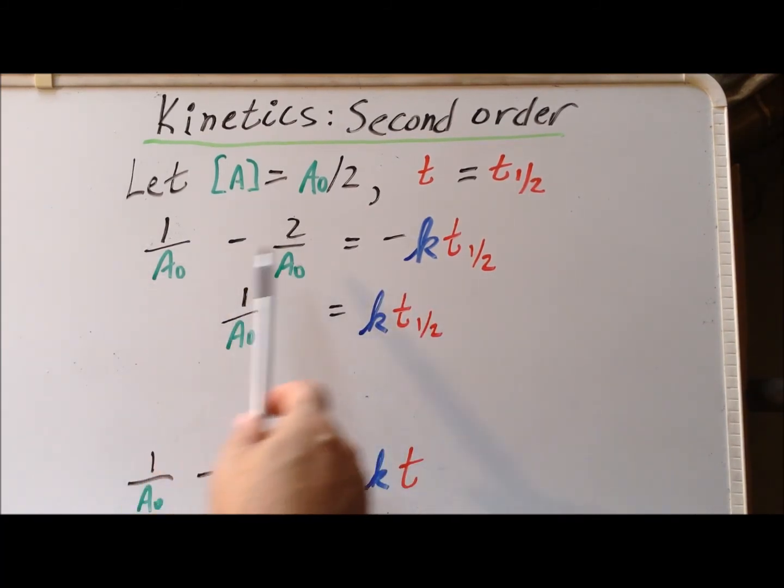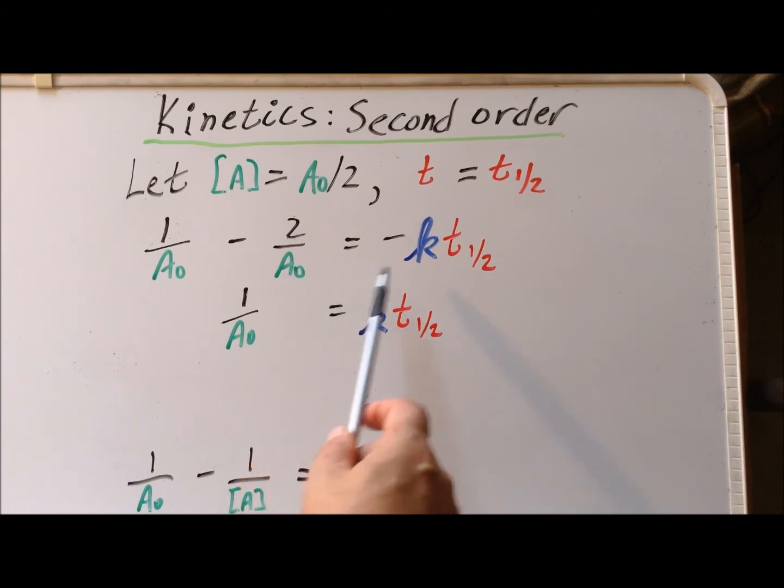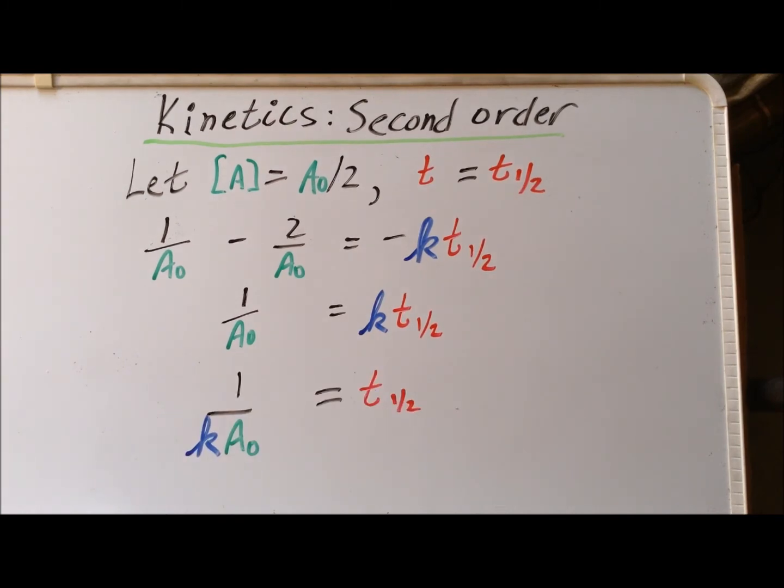Subtracting on the left-hand side, we get -1/A₀. And then minus on this side and minus on that side, if we multiply each side by -1, now we get everything positive. 1/A₀ equals positive kt₁/₂. And then we simply divide each side by k to get the half-life. With that, we get a result that the half-life for a second-order reaction involving one reactant is equal to 1 divided by k times A₀.